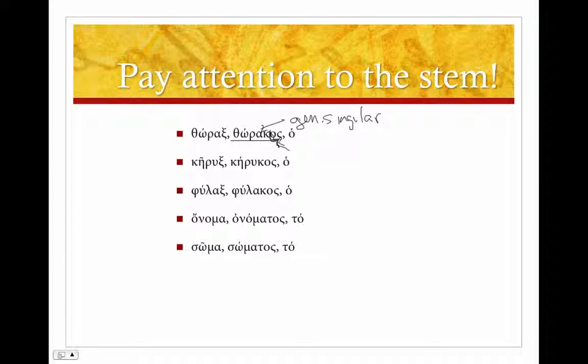And that will give us the stem thorac. You might try to guess the stem from the nominative singular, but the most sure way of getting that stem is to use the genitive thoracos. So thorax, thoracos, notice it's masculine, means chest plate, breast plate, piece of armor. So your stem is thorac.